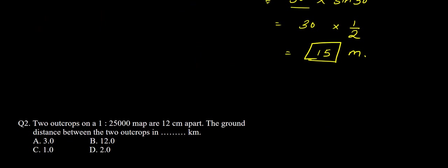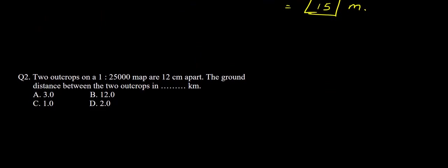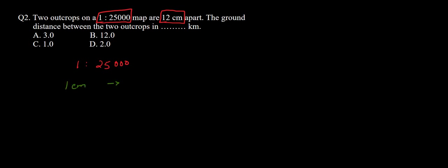Question 2 says: two outcrops on a 1:25,000 map are 12 centimeters apart. We need to find the ground distance between the two outcrops. On the map the two outcrops are 12 centimeters apart, and their ratio to the actual distance is 1:25,000.